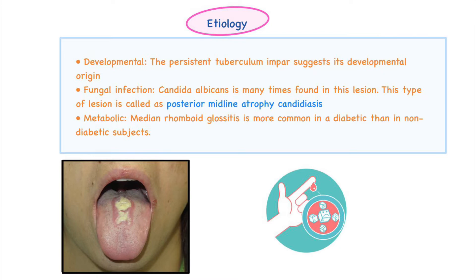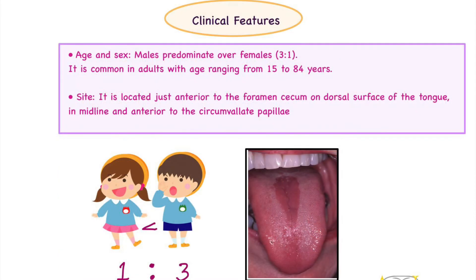Due to its association with Candida albicans, this lesion was previously known as posterior midline atrophic candidiasis. The third etiological factor is metabolic causes — this lesion is more commonly associated with diabetes. In diabetic subjects, a kind of immunodeficiency develops gradually. Since Candida is associated with immunodeficient subjects, it tends to accumulate in this area of the tongue because of the inherent systemic defect present.